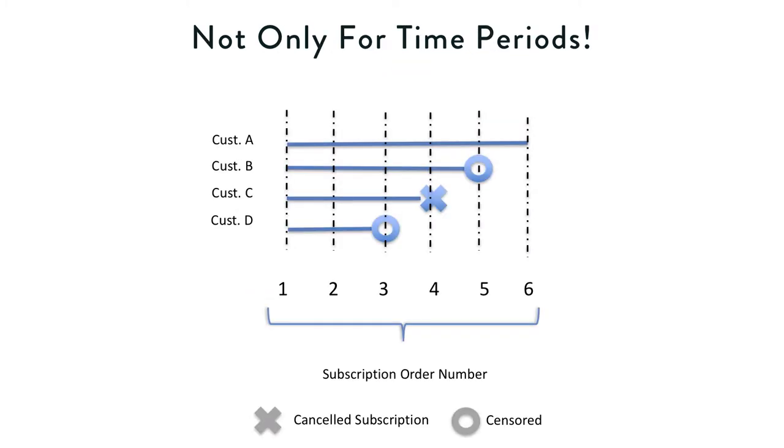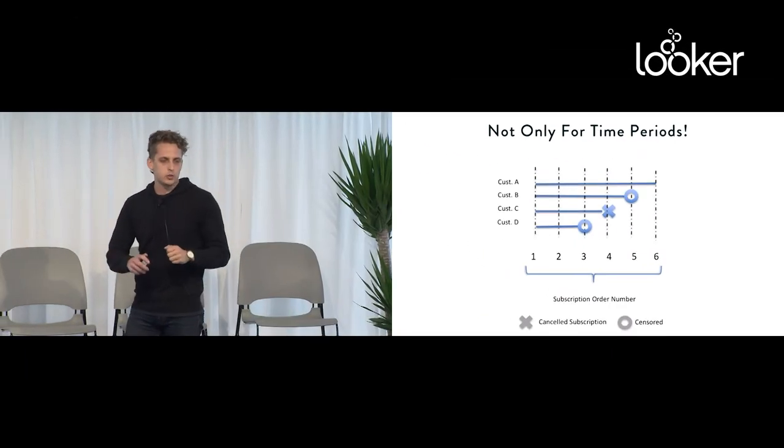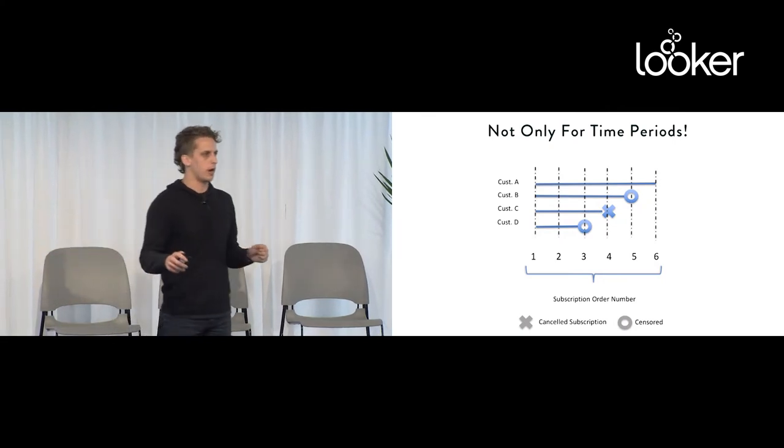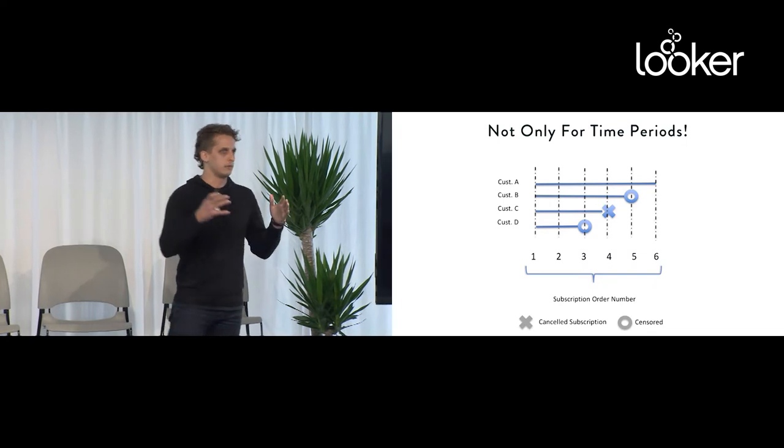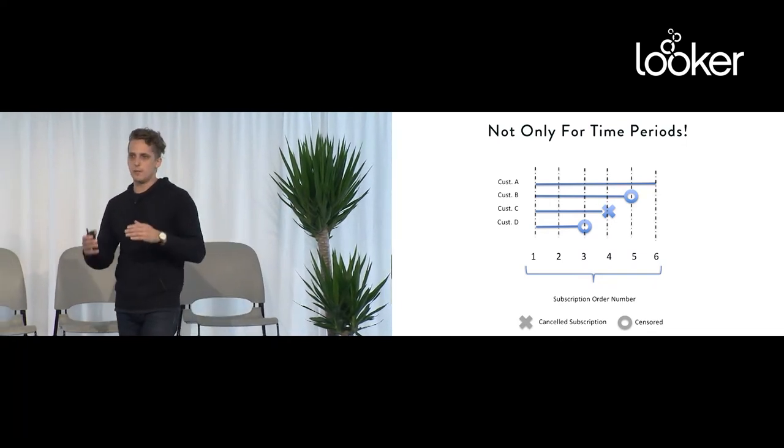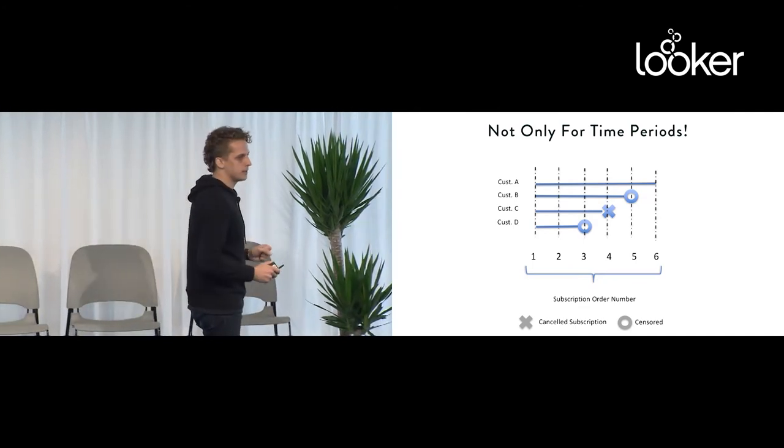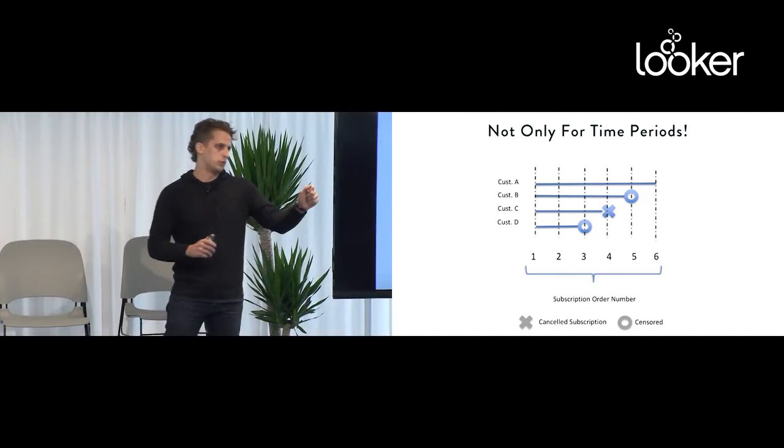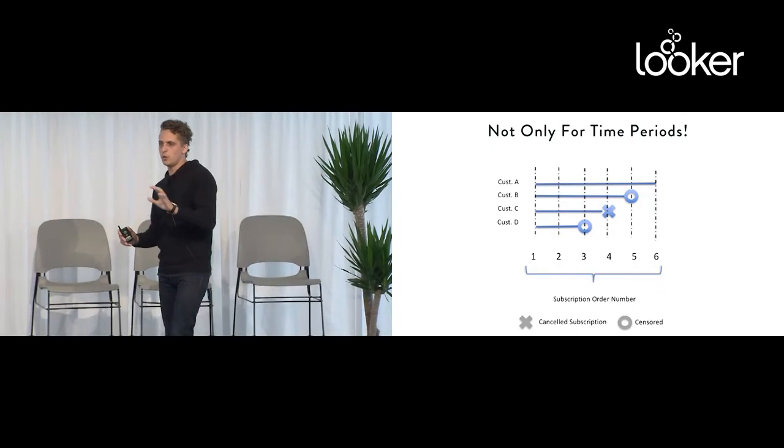What's even niftier is that on your x-axis, it doesn't have to be time periods. You can use this idea of cumulative probabilities for a whole bunch of different things. What's actually interesting to us is how many subscription orders do they complete before they unsubscribe. For us at Harry's, you can be on subscriptions at a whole bunch of different cadences. Maybe you get a box every 60 days, maybe every 120 days, maybe every 150 days. Maybe every third box you delay an extra 45 days for whatever reason.